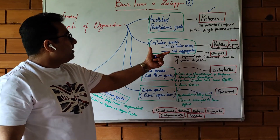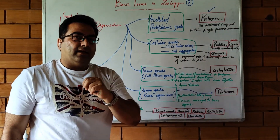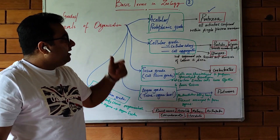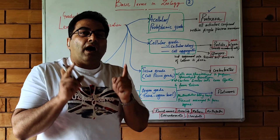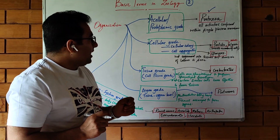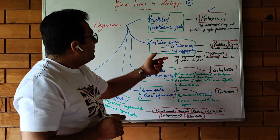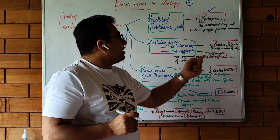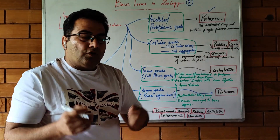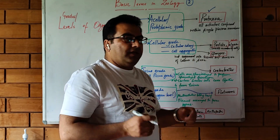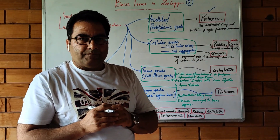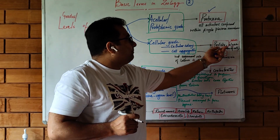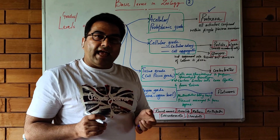The second grade, slightly more advanced, is the cellular grade of organization. Here there are different kinds of cells but they are not organized into tissues, although division of labor can be seen. Some organisms form colonies, such as algae and protists — for example, Volvox consists of a number of cells forming a colony.